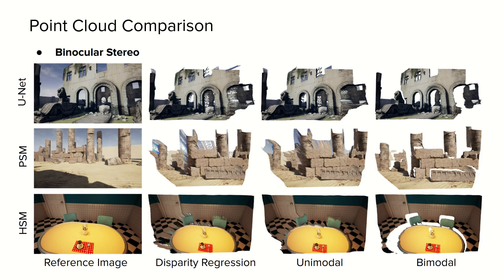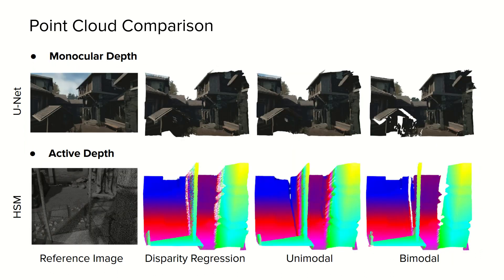Here we show 3D point clouds obtained using different 2D and 3D stereo backbones on the binocular stereo dataset, adopting different output representations such as standard disparity regression, a unimodal formulation, and our bimodal mixture model. We can note that our bimodal representation notably alleviates bleeding artifacts near object boundaries, resulting in more accurate 3D reconstructions. Moreover, we also demonstrate that our method can be effectively adopted for the monocular depth estimation task, as well as on an active depth setting.